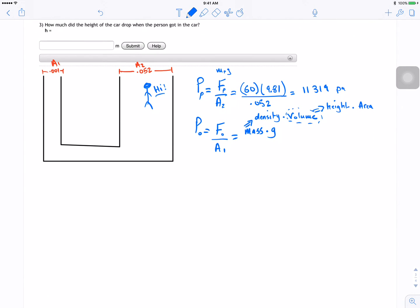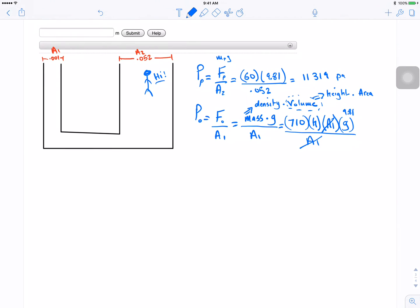So let's plug in everything in here. So this is A1. So this is going to equal to the density, which is 710, and the volume, the volume is height, this is what we're trying to find, which is H times A1 times G. And then A1 can cancel, and the G is just 9.81.